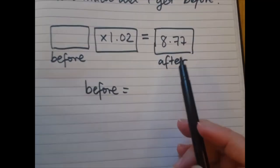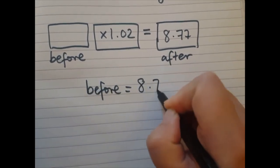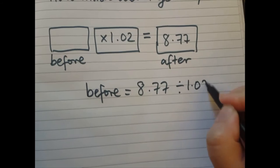So here, the opposite of times 1.02, I'm going to do divide by 1.02. Let's do it on the calculator.